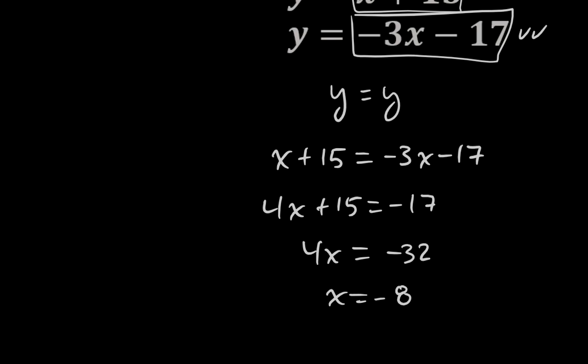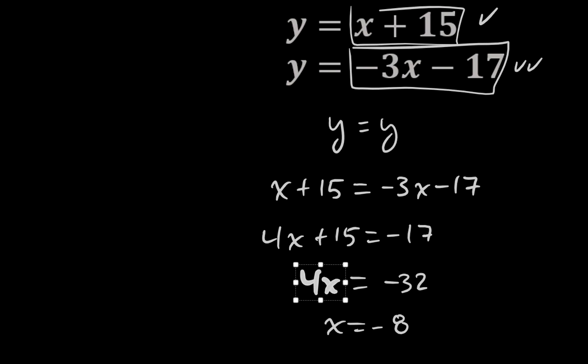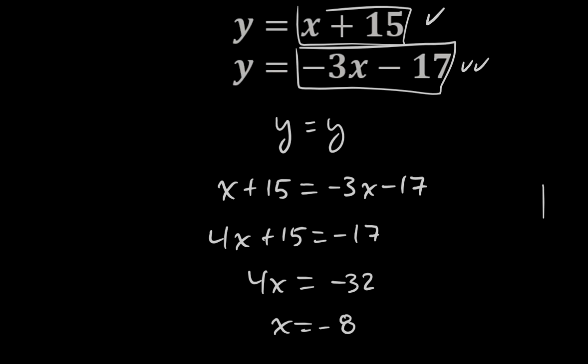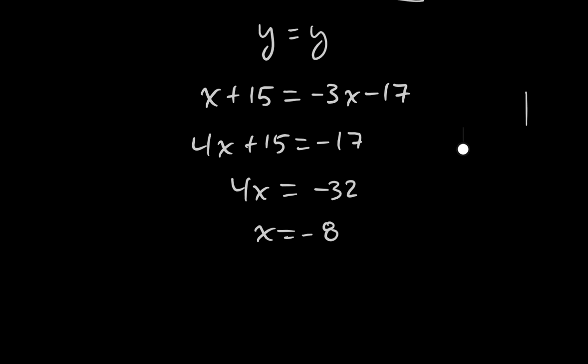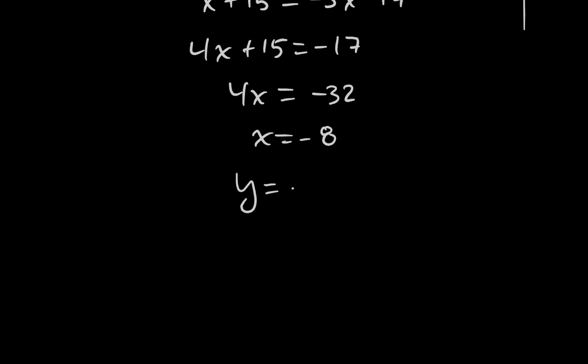So I know x, it's negative 8. The question is, what's y? Well, there's two ways to get y, right? You can see there's two different equations here, and I could pick either one. I'll just pick the first one up there. It says that y should equal x, which is negative 8 plus 15.